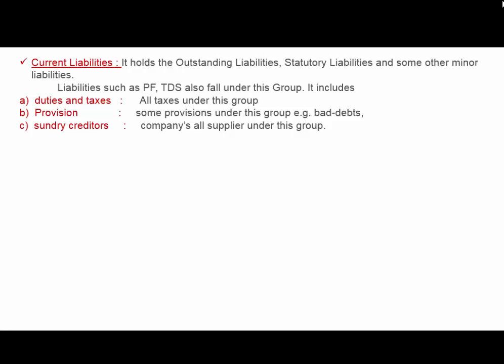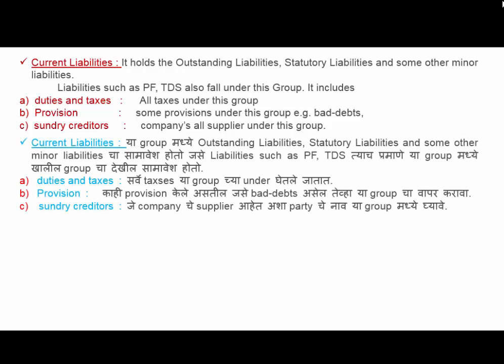Next is Current Liabilities. It holds outstanding liabilities and statutory liabilities and some other minor liabilities. Such liabilities include PF and TDS, which also fall under this group. It includes Duties and Taxes, Provisions (for example bad debts), and Sundry Creditors — all company suppliers are included under this group.